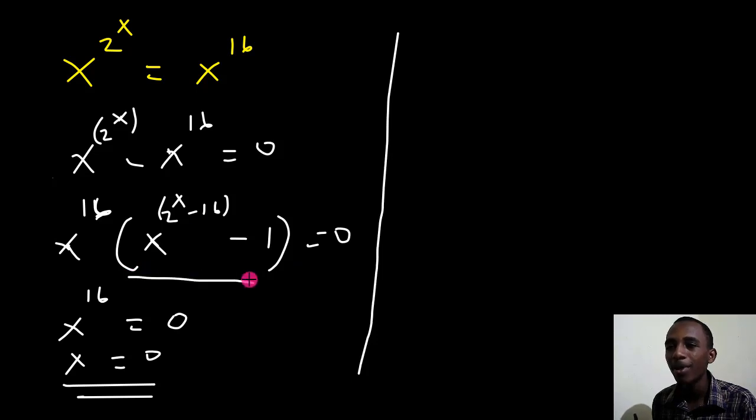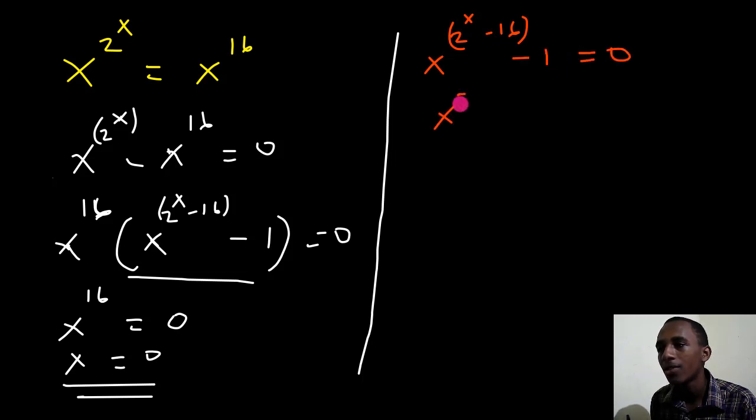Okay, let's take the second part of the equation now. So we have x to the power 2 to the power x minus 16 minus 1 equals 0. So this is x to the power 2 to the power x minus 16 equals 1.